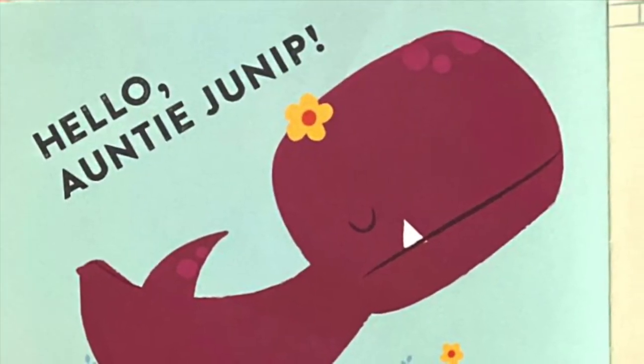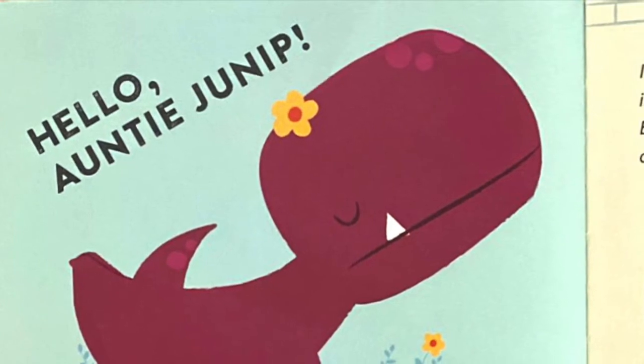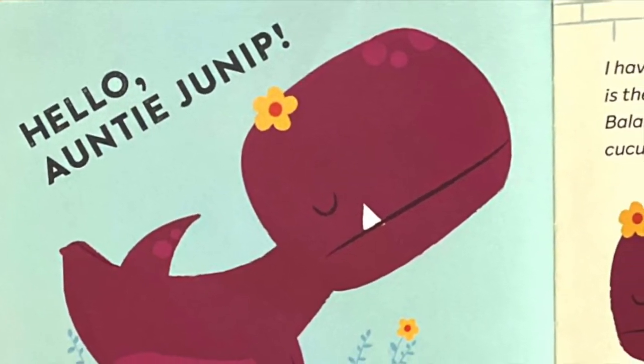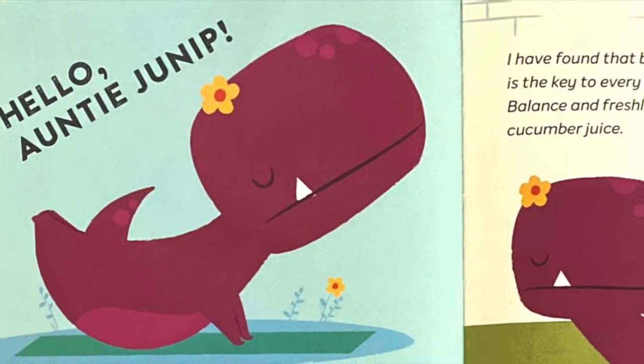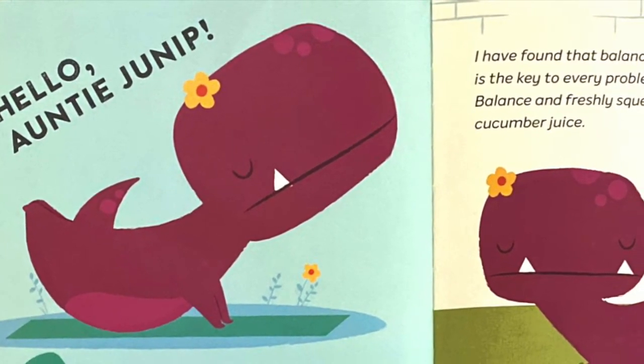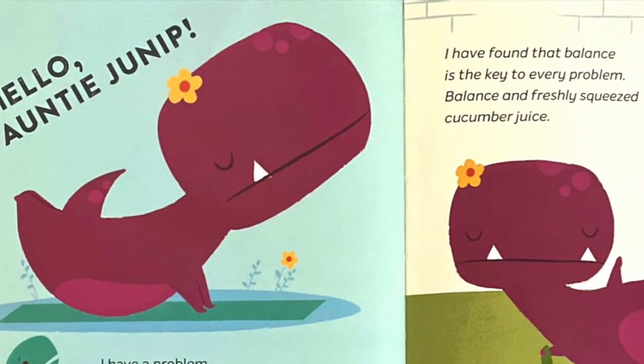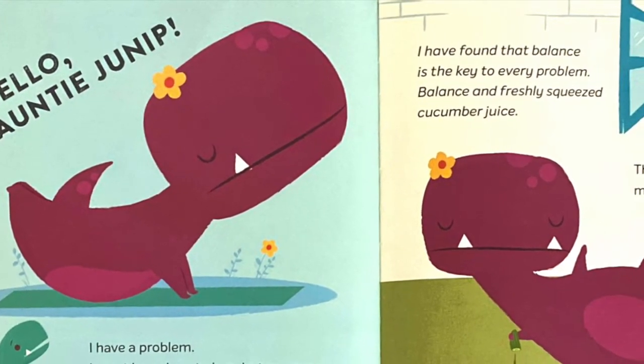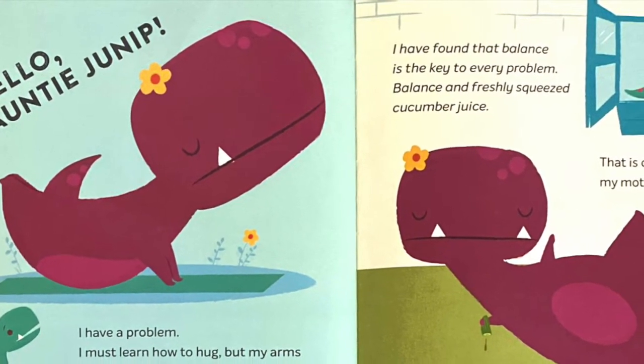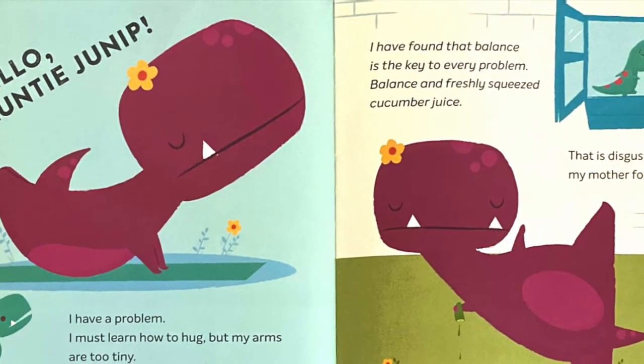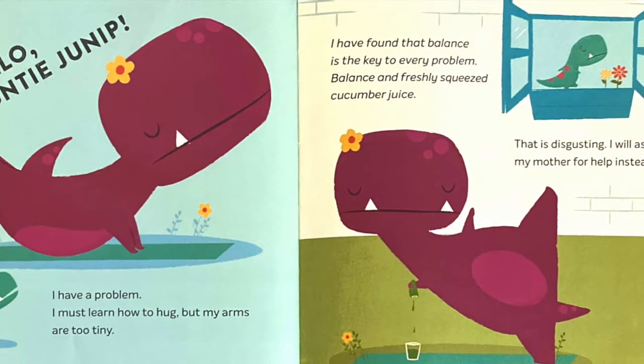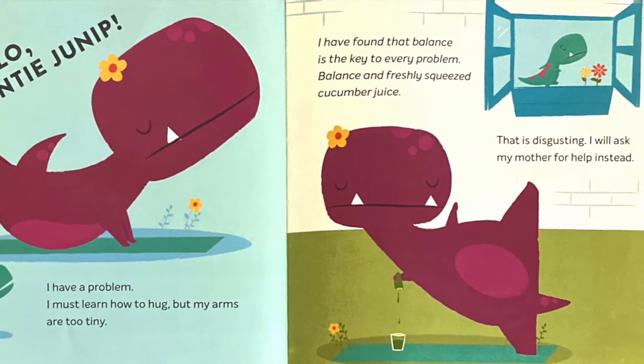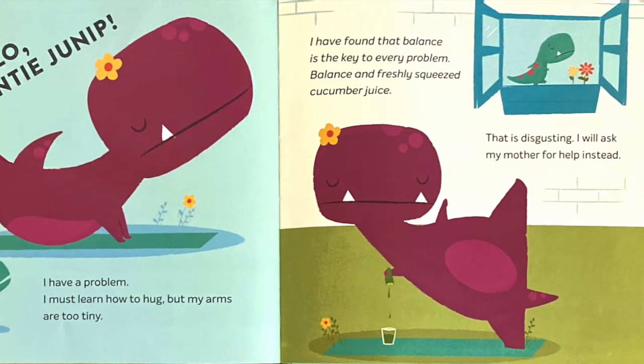Hello, Auntie Junip. I have a problem. I must learn how to hug, but my arms are too tiny. I have found that balance is the key to every problem. Balance and freshly squeezed cucumber juice. That is disgusting. I will ask my mother for help instead.